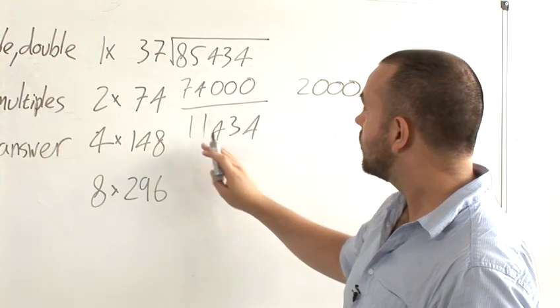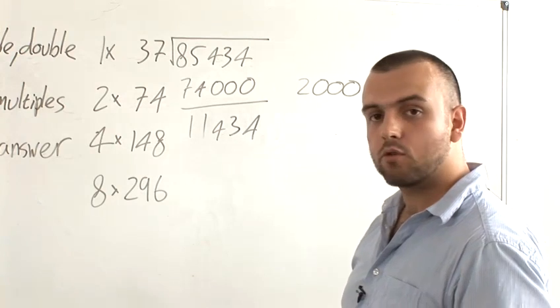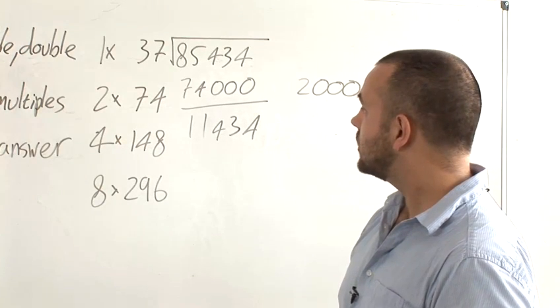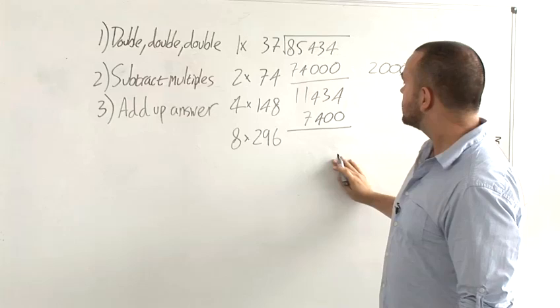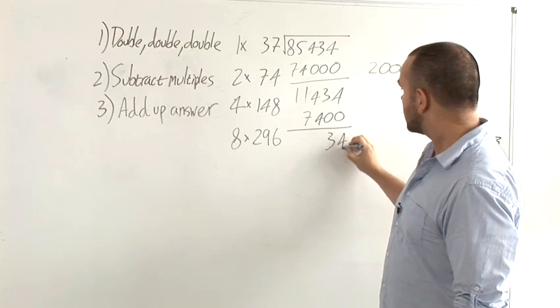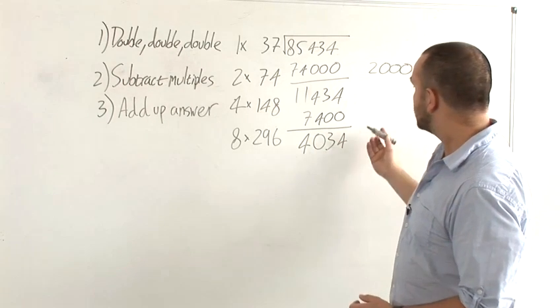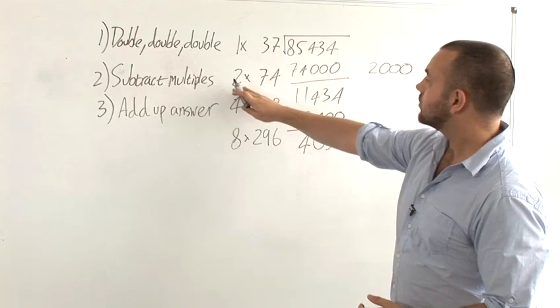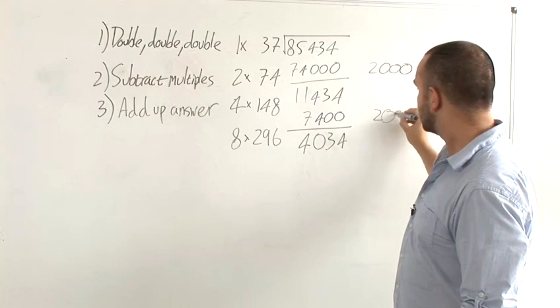You then carry on. What number can you deduct from 11,434? The most appropriate number to deduct from here would be 7,400. This would give you, afterwards, 4,034. Again, you note down the number you deducted. It was the double number, so 2 times 100 gives you 200.